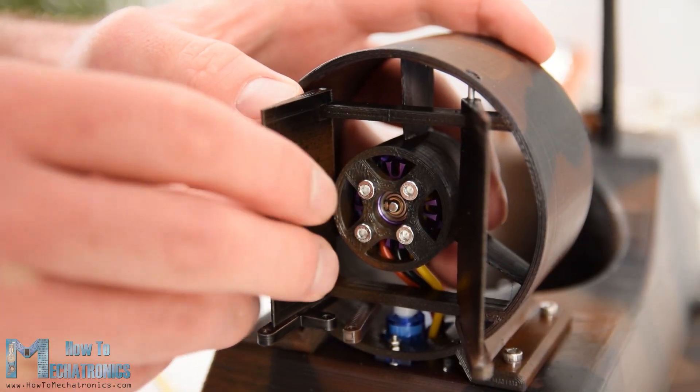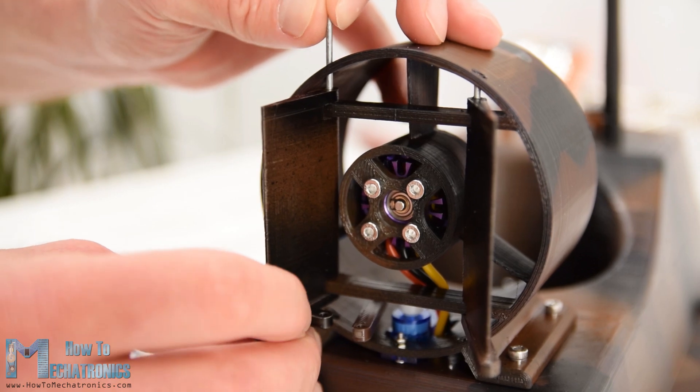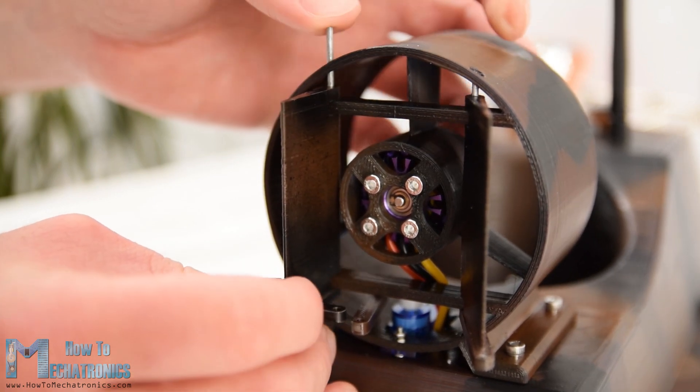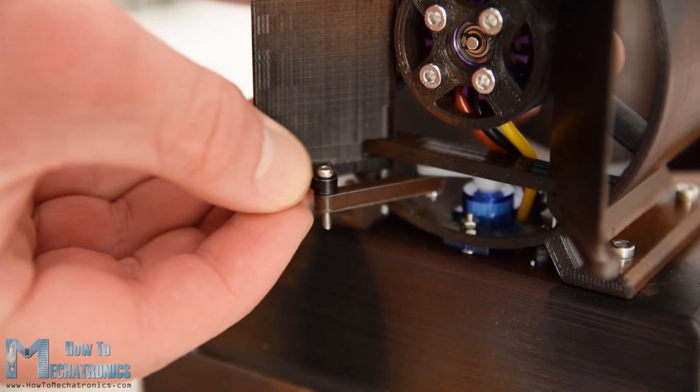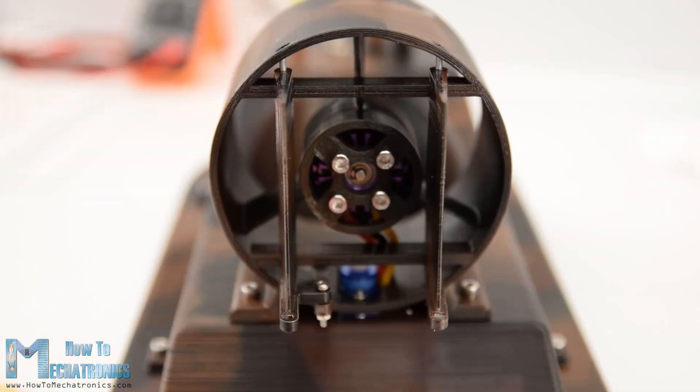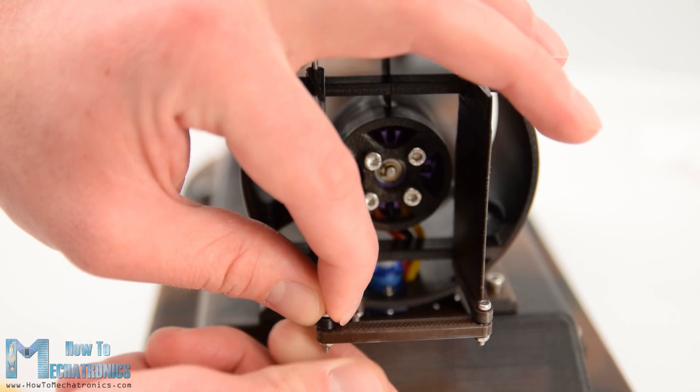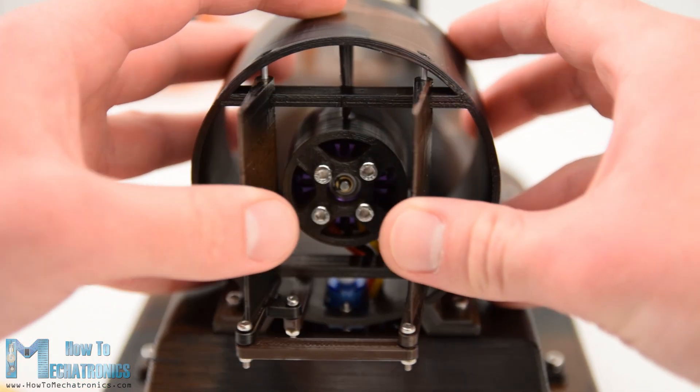In the same way I attached the second rudder. This rudder has an additional slot so we can connect it to the previously inserted link to the servo. Again I used M2 bolt and nut for securing them. Finally I connected the two rudders to each other using another link and with that the steering system was completed.